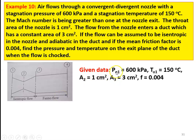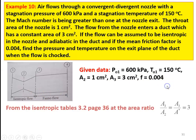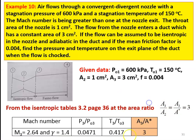Given data: stagnation pressure PO at entry equal to 600 kilopascal, stagnation temperature TO equal to 150 degree Celsius, throat area A2 equal to 1 centimeter square, exit area of nozzle or constant area duct A3 equal to 3 centimeter square, and friction factor F equal to 0.004. From the isentropic table, table number 3.2, page number 36, area ratio A3 by A2 equal to A3 by A star equal to 3.